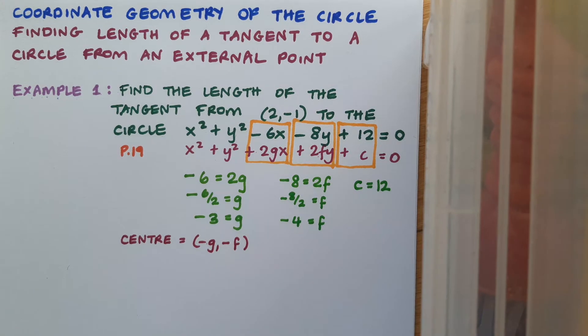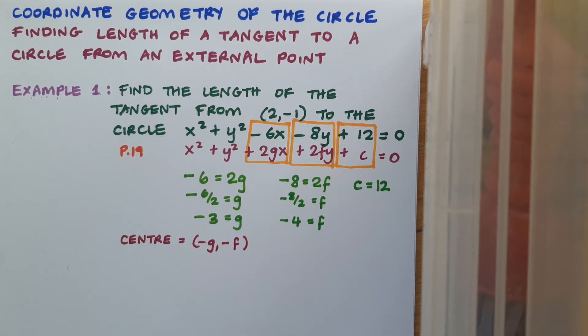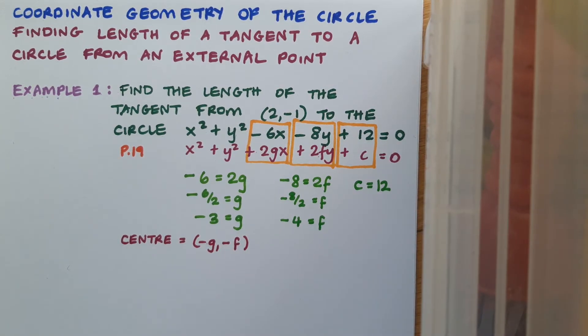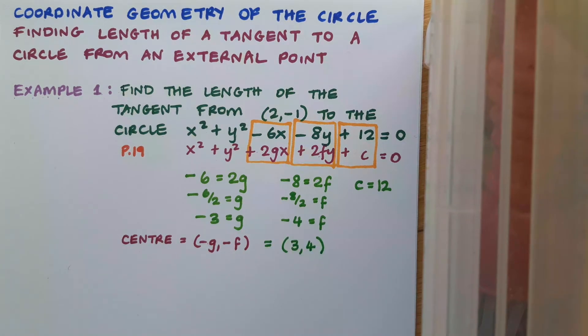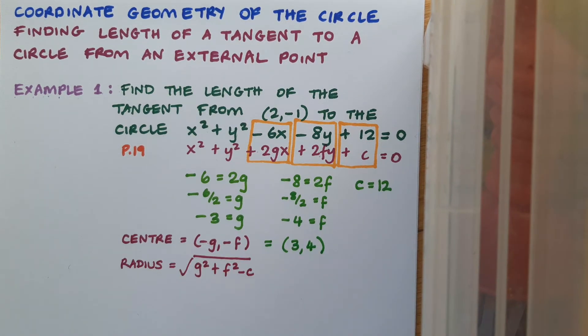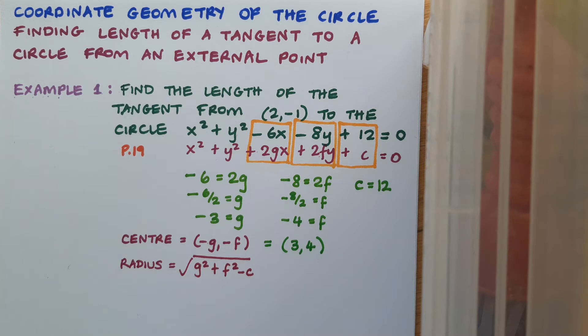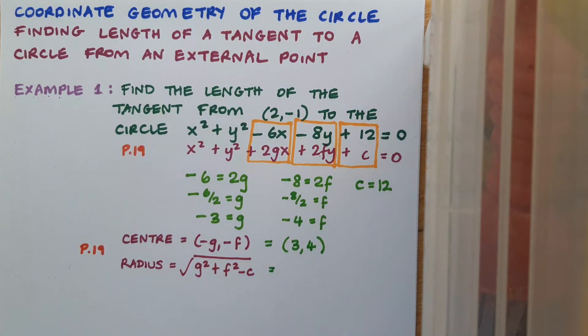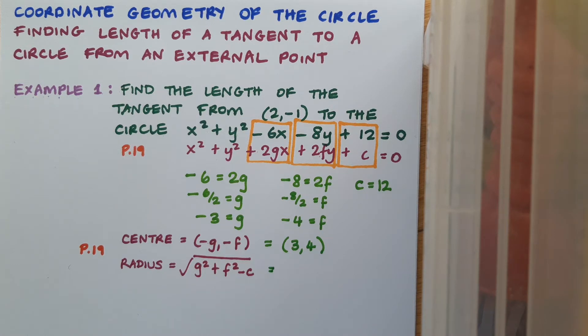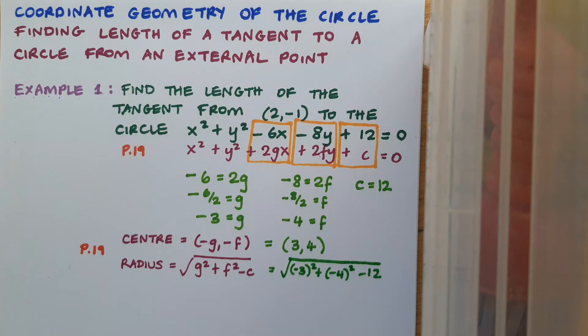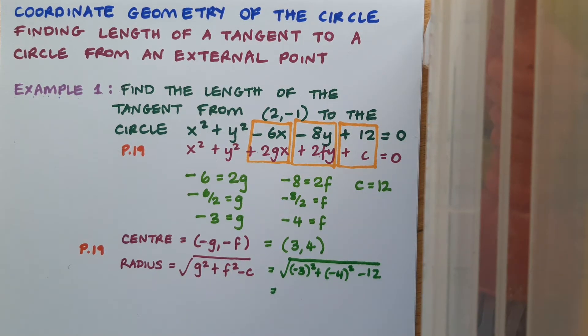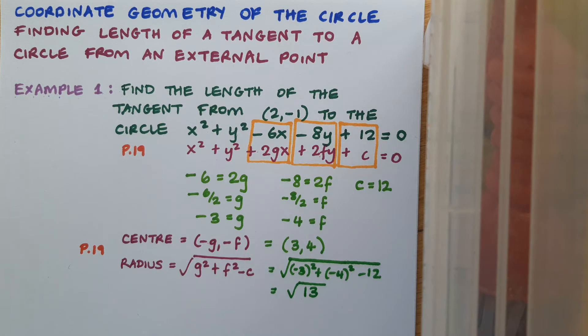So as per the log tables, the centre of the circle is (-g, -f). So I'll just change the signs of these two values to make the centre. So my centre is (3, 4). And the radius can be found using the root of g² + f² - c. Again, all on page 19 in the log tables. So take a minute here to work out the radius yourself. My radius comes out as √13.